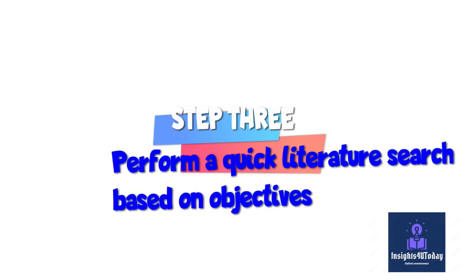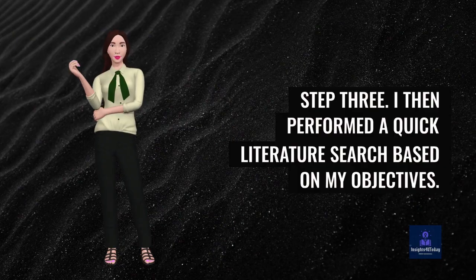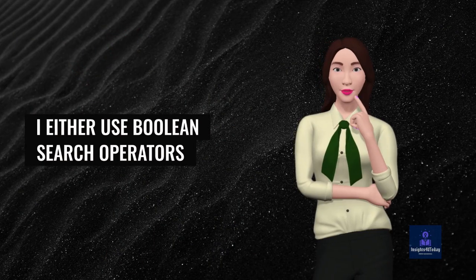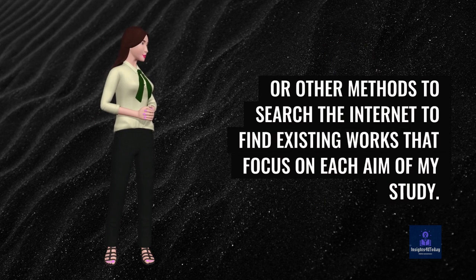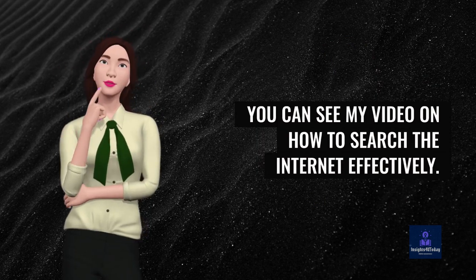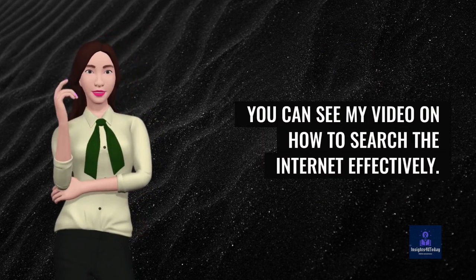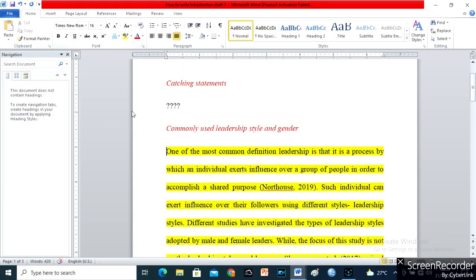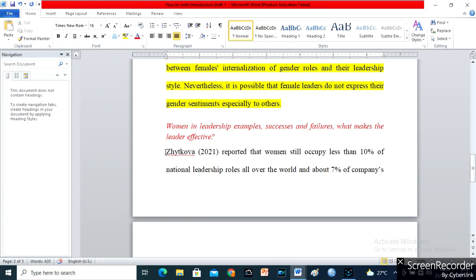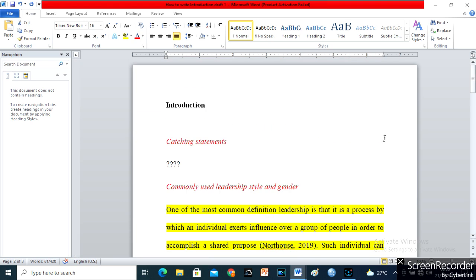Step 3. I then perform a quick literature search based on my objectives. I either use Boolean search operators or other methods to search the internet to find existing works that focus on each aim of my study. You can see my video on how to search the internet effectively. Then I write all I have gathered under each of these objectives in my first draft. Then I study them, know what has been done, the gaps, missing links, and what has not been appropriately addressed.